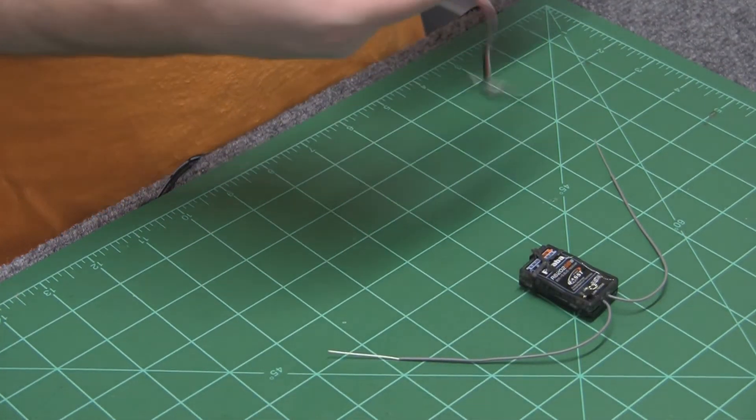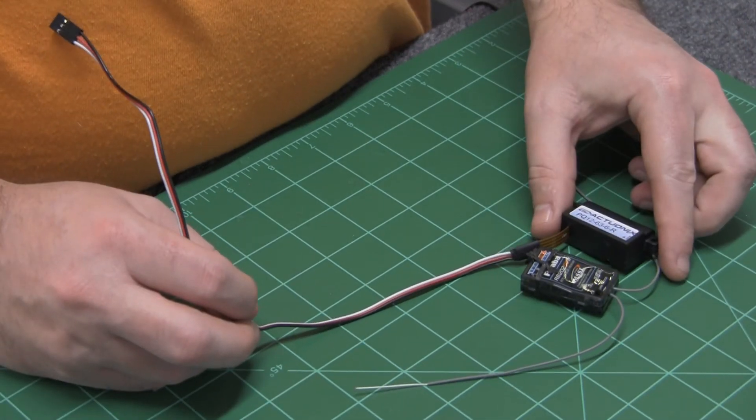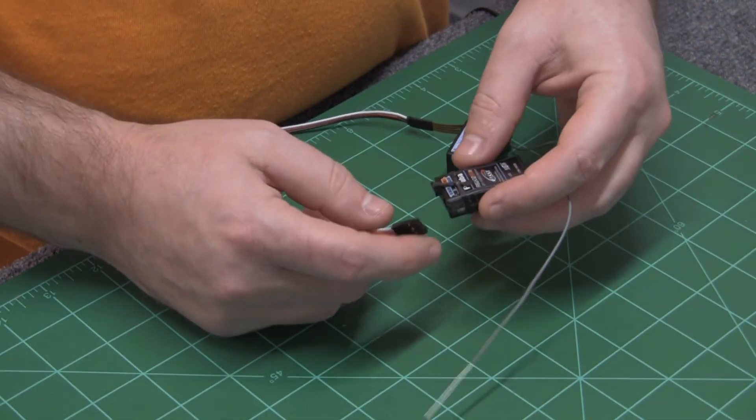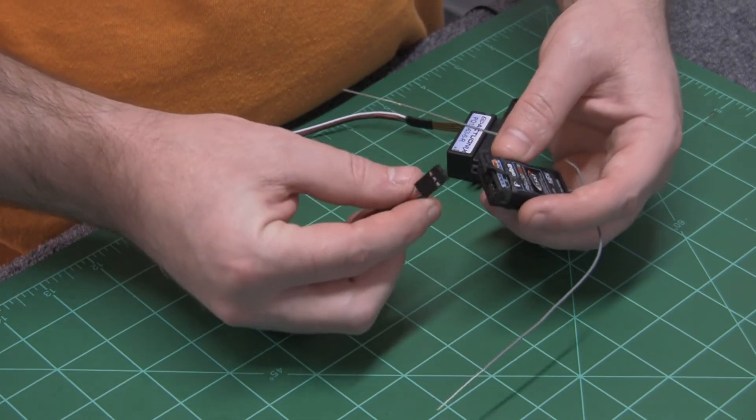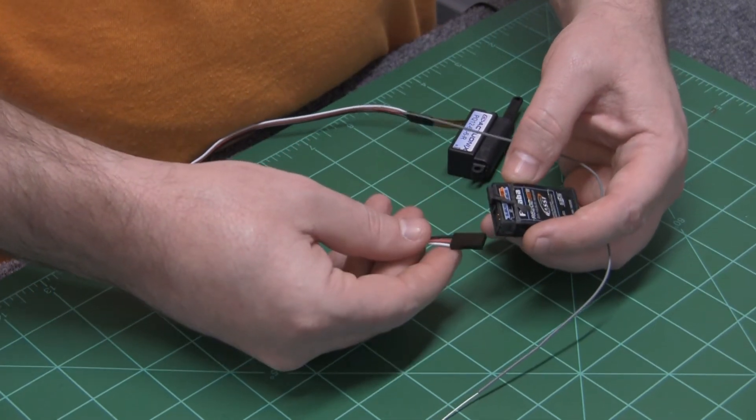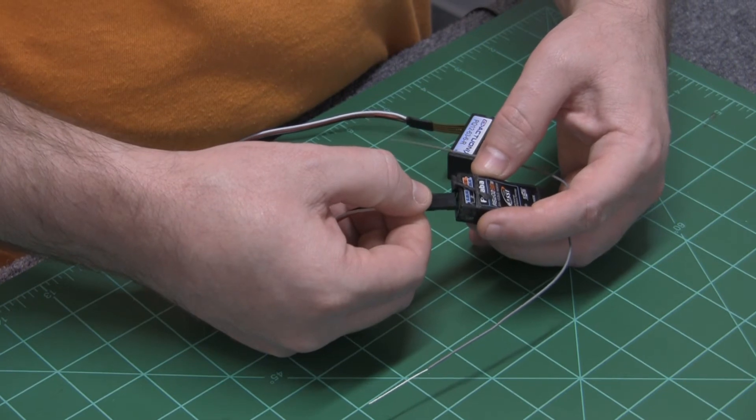So I got a receiver. You can kind of see how small these things are. You know, it's comparable to this little Futaba receiver. So let me plug this in, typical white, black, and red, like a servo lead.